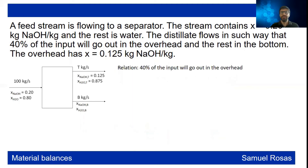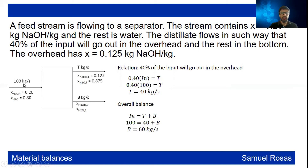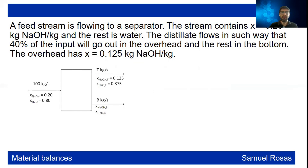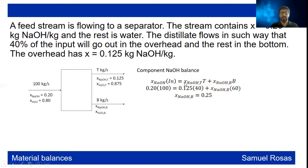From the relation: 0.40 times the input equals the overhead flow T, so T = 0.40 × 100 = 40 kg/s. From the overall balance, inputs equal outputs: 100 = T + B, so B = 60 kg/s. Then for the component balance on NaOH: the composition times the stream flow at inlet equals the sum at the outlets.